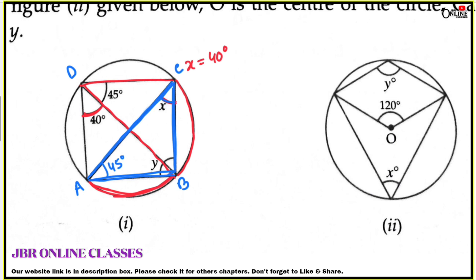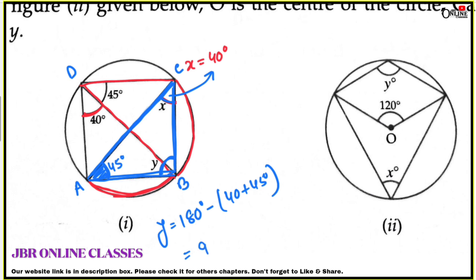In triangle ABCD, X equals 40 degrees and the other angle equals 45 degrees. Since the sum of three angles in a triangle equals 180 degrees, Y equals 180 minus (40 plus 45), which is 180 minus 85, equals 95 degrees. So Y equals 95 degrees and X equals 40 degrees.